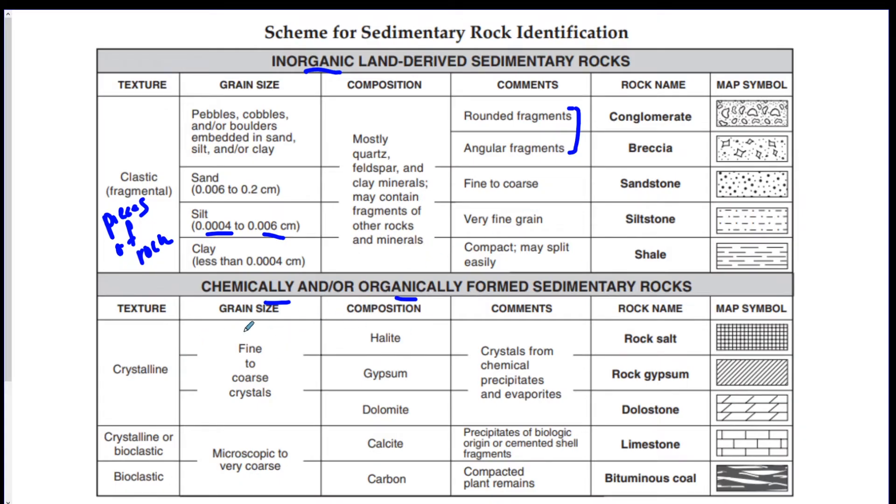Down here for chemical, anything that says crystalline is chemical. So these two are chemical. So that means there are four chemical rocks: rock salt, rock gypsum, dolostone, and then limestone can be either chemical or bioclastic is organic, meaning it was made from something that was once living. Things to notice on this chart that are important, I would say limestone here is made from calcite, which means limestone bubbles with acid. Limestone is also made from shell fragments. And last but not least, coal is made from plant remains. So dead plants compressed and compacted together makes coal.